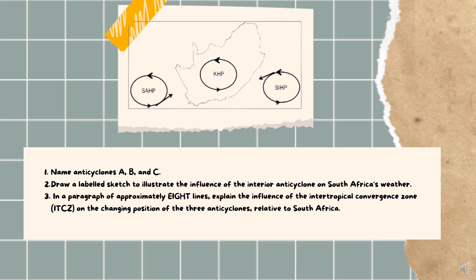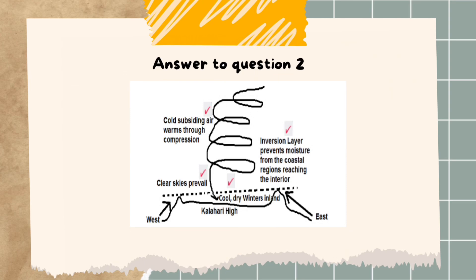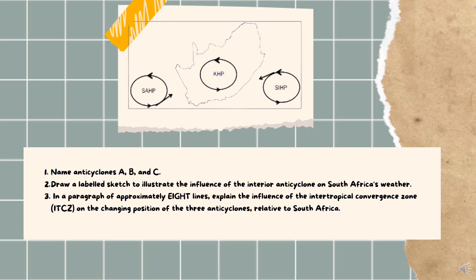The next questions ask you to name anticyclones A, B, and C. A is the South Atlantic High Pressure cell, B is the Kalahari High Pressure cell, and C is the South Indian High Pressure cell. The second question requires you to draw a sketch illustrating the influence of the interior anticyclone — the Kalahari High Pressure cell — on South Africa's weather. Think of it like the winter and summer sketches shown previously. The labels are the most important part, more important than the drawing itself.